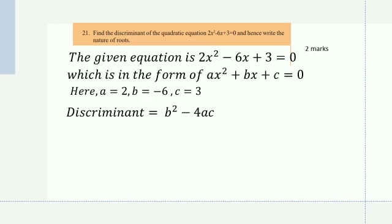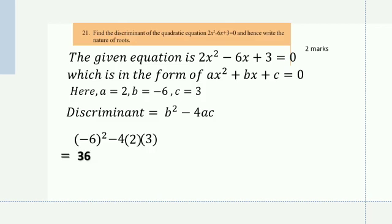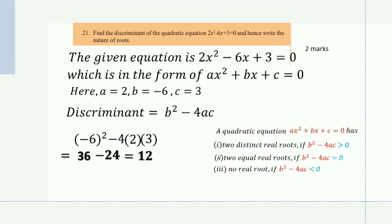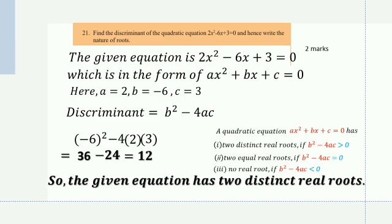The discriminant is b²−4ac. Substituting the values: (−6)²−4×2×3 = 36−24 = 12. Since the discriminant equals 12, it is greater than 0. Therefore the given equation has two distinct real roots.